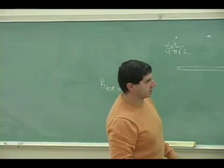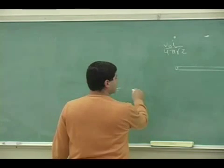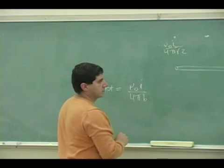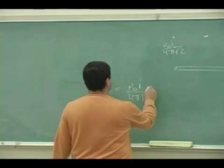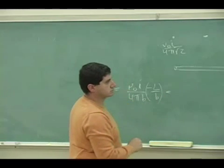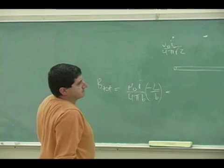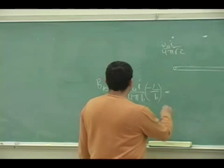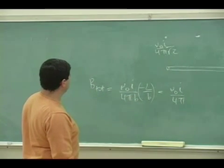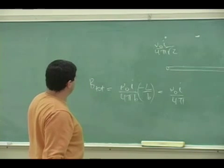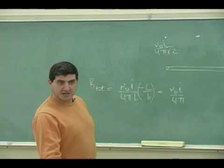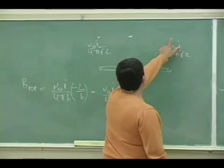The first one cancels, the second one becomes A is L, so you're left with L over B. If I put in 1, 1, 1, that's wrong — it's not the same. That's interesting, it's not the same. Does that make sense? Yes, so it's a stronger magnetic field here.